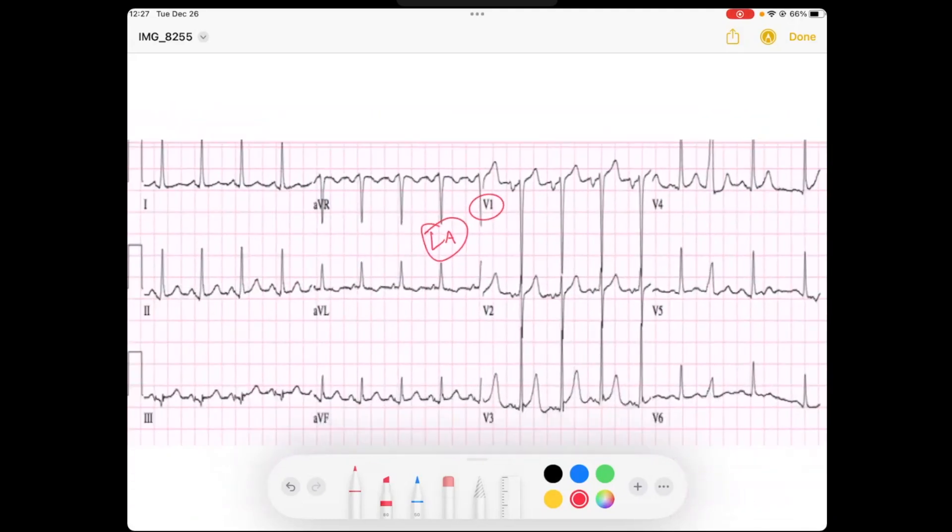And if you look at these P waves, here are our P waves. You can see that they kind of have a positive deflection and then a very large negative deflection. And that large negative deflection is absolutely greater than one box by one box. And so that's pretty obvious criteria there for left atrial enlargement.